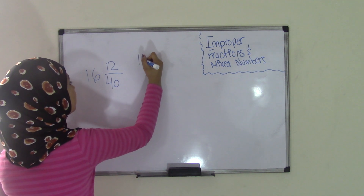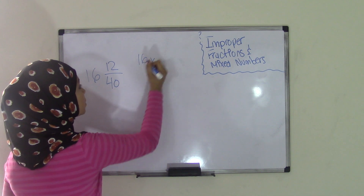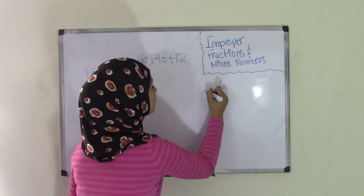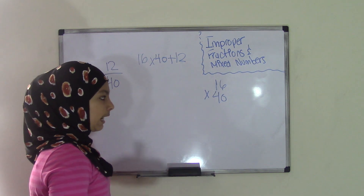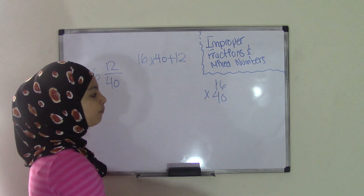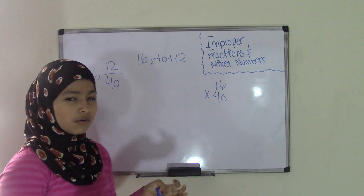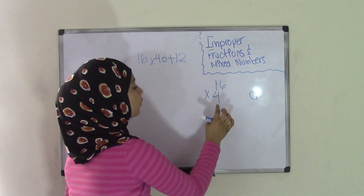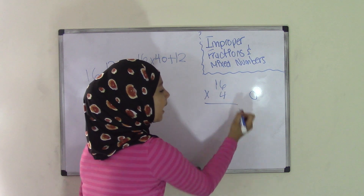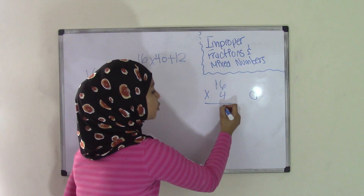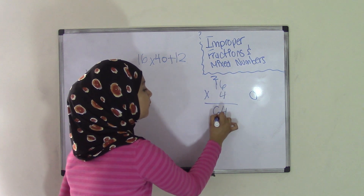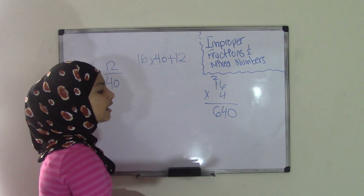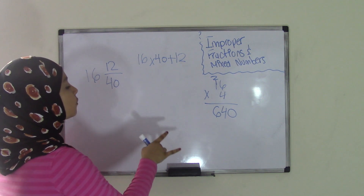So that becomes 16, the whole number, times 40, the denominator, plus 12, the numerator. First do 16 times 40. Here's an easy trick: whenever you have a number with a 0 after it, forget about the 0 for now and just do 16 times 4. 6 times 4 is 24, carry the 2. 4 times 1 is 4, plus 2 equals 64. Then bring back the 0 and add it to your answer, so 64 becomes 640. The product of 16 times 40 equals 640.